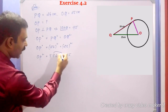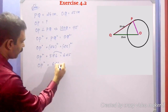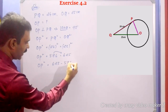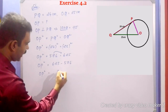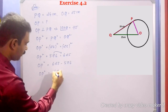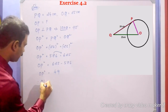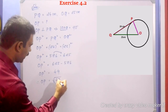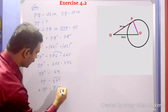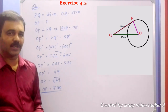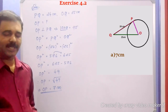Transposing 576 to the RHS, we get OP squared equals 625 minus 576 equals 49. Therefore OP equals 7 cm. So the radius of the circle is OP equal to 7 cm. Option A, 7 cm, is the correct answer.